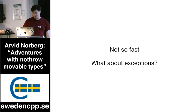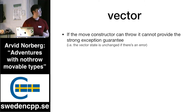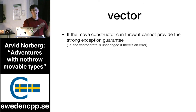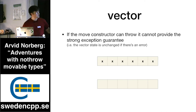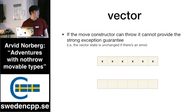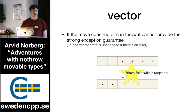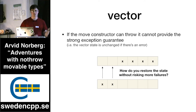But what about exceptions? There's a subtlety here. If the move constructor can throw an exception, what I just showed can no longer give you the strong exception guarantee in a vector. The strong exception guarantee means that if something fails, the object will remain in its original state. Imagine you're moving objects from the top array into the new array at the bottom, and one move fails with an exception. You have to undo your work, but how can you move those back without risking them also throwing an exception? There's no way to restore state in that scenario.